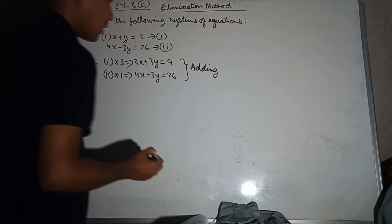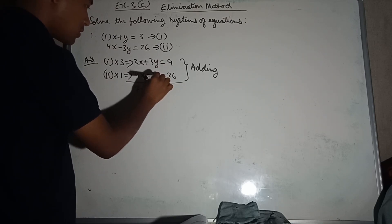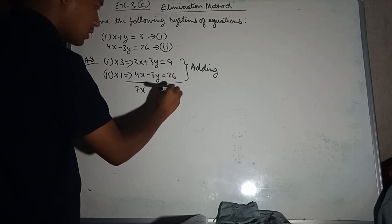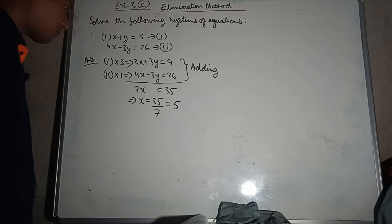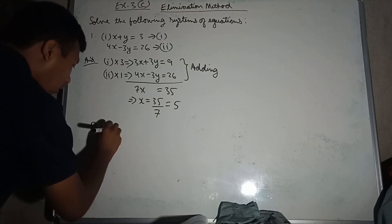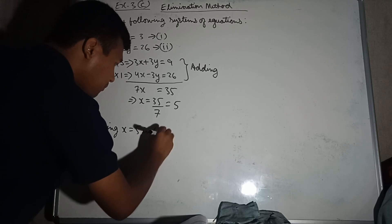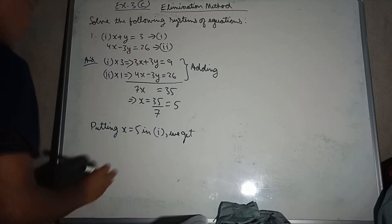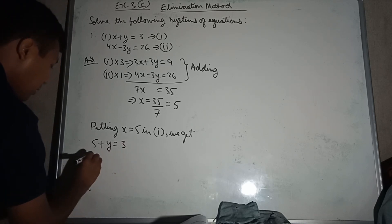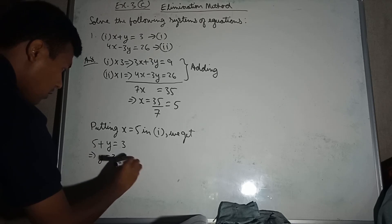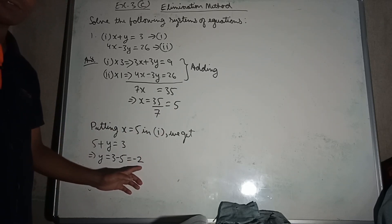Adding the equations: 3x plus 4x equals 7x, and 3y minus 3y equals 0. So 7x equals 9 plus 26, which is 35. Therefore x equals 35 divided by 7, which is 5. Putting x equal to 5 in equation 1, we get y equal to 3 minus 5, which is minus 2. So x equals 5 and y equals minus 2 is the answer.